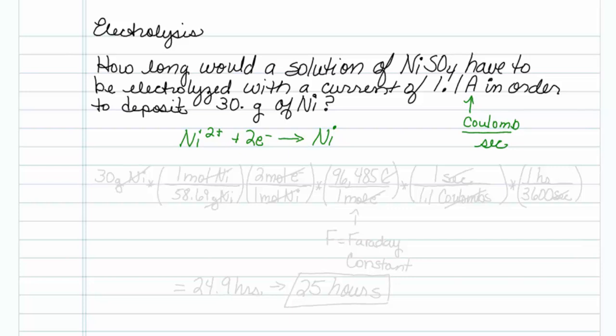I can do this all in one big conversion here. I'm going to start out with 30 grams of nickel, and it would be helpful if I knew how many moles of nickel that was. So there are 58.69 grams of nickel in one mole of nickel.